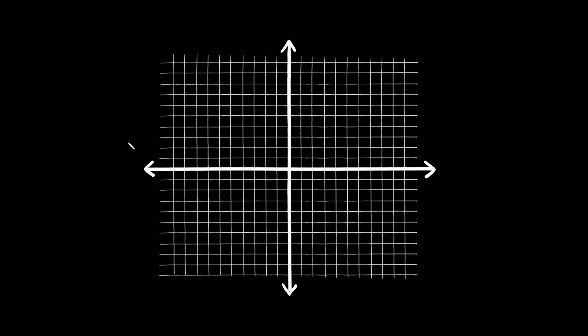The way you end up with vertical or horizontal lines is whenever you find a situation like this — whenever you find x is equal to a number, or y is equal to a number. Whenever you see a situation like this, it's basically a dead giveaway that your graph is either going to be completely horizontal or completely vertical.